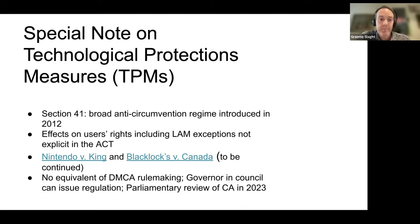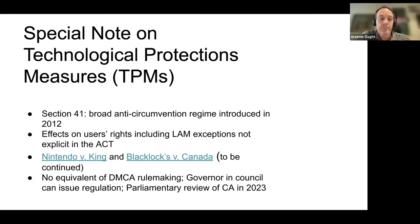There has been some case law — some unfavorable, some favorable — and there is currently a set of cases ironically involving a company called Black Locks working its way through the courts that might allow the courts to provide further clarity on whether the anti-circumvention regime was really meant to override other parts of the Act which allow LAMs to engage in lawful copying for specific purposes. That's the end of Graham's portion; over to Anna.